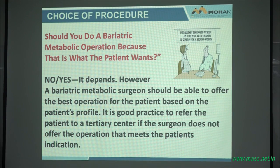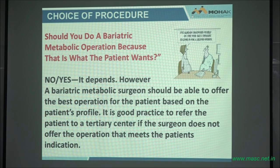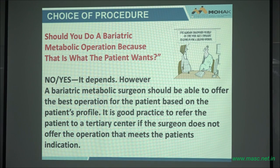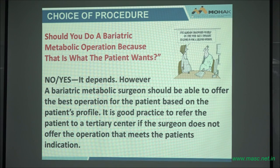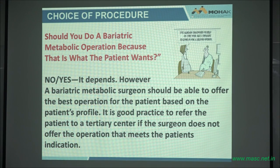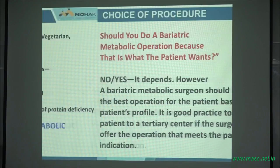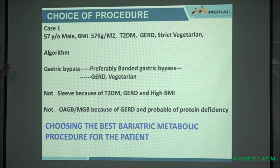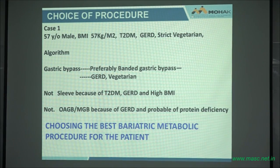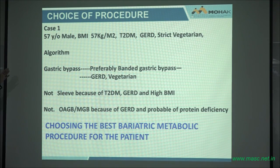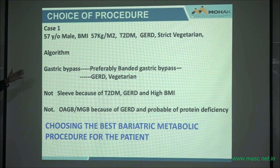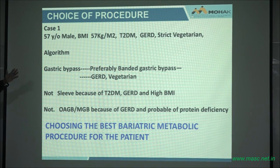Send them to a clinic where he does gastric bypass, and that patient has an 80% chance of getting resolution. That is good practice. When a patient comes in with a small breast tumor you can excise it, but if you see something more than that, you send it to the oncology center. Case one: 57-year-old, BMI of 57, type 2 diabetes, with GERD, strict vegetarian. Algorithm — give them a gastric bypass, or preferably a banded gastric bypass.